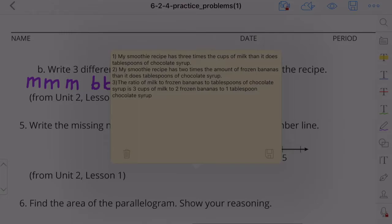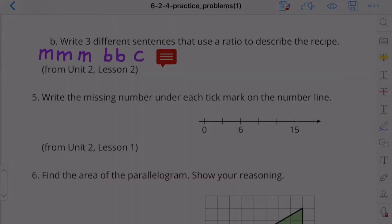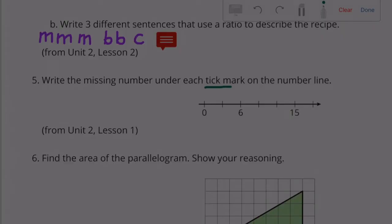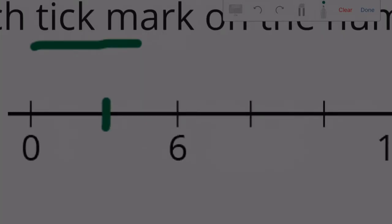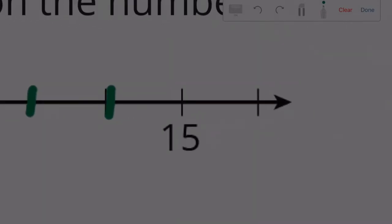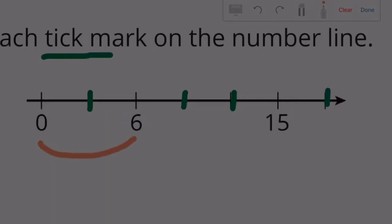Problem 5: Write the missing numbers under each tick mark on the number line. We identify the tick marks with missing numbers. From zero to six represents six, and the midpoint appears to be halfway — so three. That gives us intervals of three.